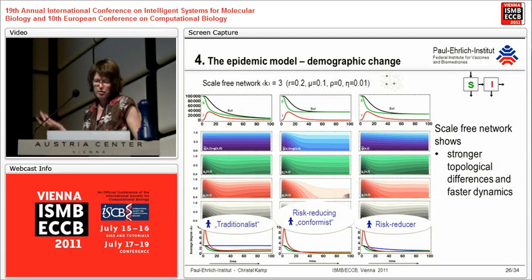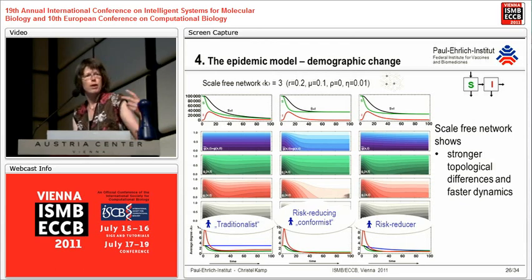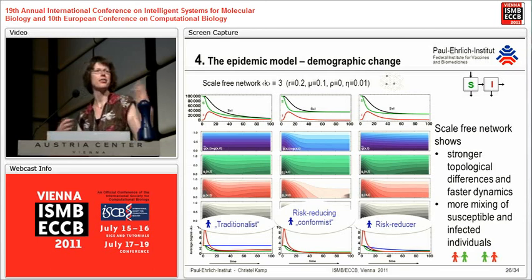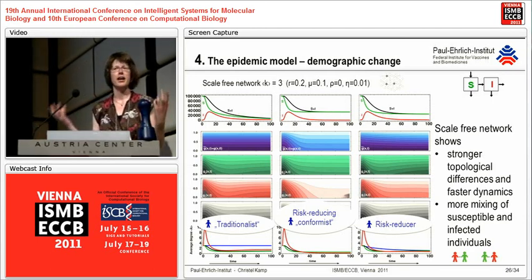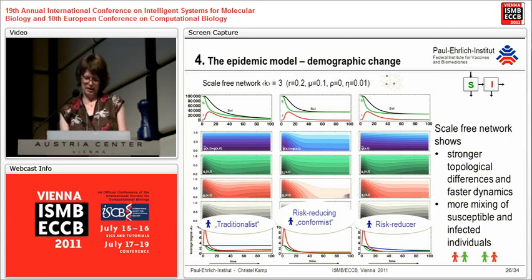This holds similarly true for scale-free or heterogeneous networks — the topological differences are larger and the dynamics faster. The equations also show there is more mixing among healthy and infected individuals in the heterogeneous networks, again supporting the faster spread.